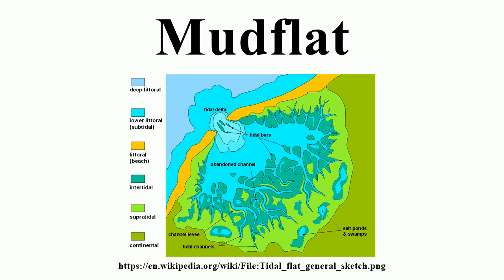Mudflat sediment deposits are focused into the intertidal zone, which is composed of a barren zone, marsh and salt pan. Within these areas are various ratios of sand and mud that make up the sedimentary layers. Barren zones extend from the lowest portion of the intertidal zone to the marsh areas. Beginning in close proximity to the tidal bars, sand-dominated layers are prominent and become increasingly muddy throughout the tidal channels. Common bedding types include laminated sand, ripple bedding, and bay mud. Bio-turbation also has a strong presence in barren zones.